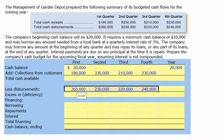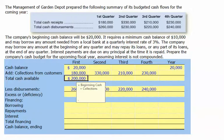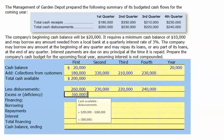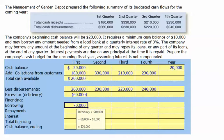Now we can move through our cash budget, taking each quarter at a time. In the first quarter, we began with a $20,000 cash balance and collected $180,000 from customers, so the total cash available is $200,000. Once we subtract our disbursements, we find we have a $60,000 deficiency, which means we're going to need to borrow money. We'll borrow $70,000 to cover our $60,000 deficit and maintain $10,000 in cash on hand at the end of the quarter.